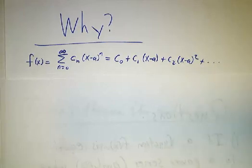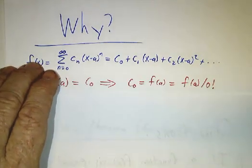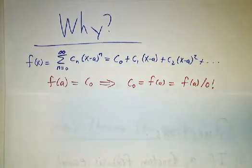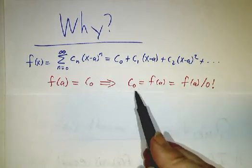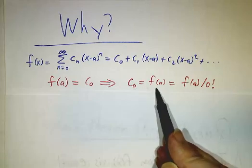Well, f of a is going to be c0 plus c1 times 0 plus c2 times 0 squared plus c3 times 0 cubed and so on. So the value of the function has to be c0. Now we turn that around. We say c0 has to be the value of the function at a.